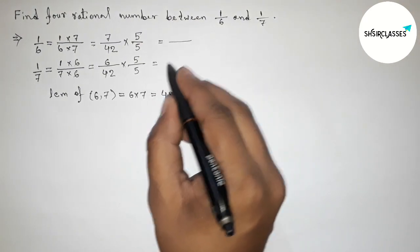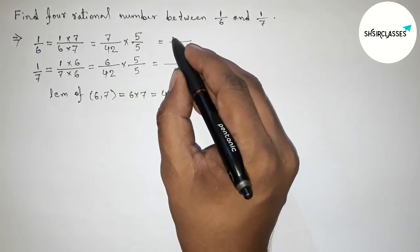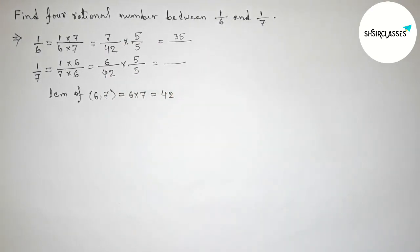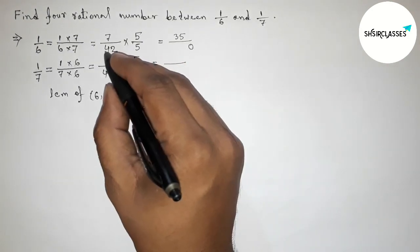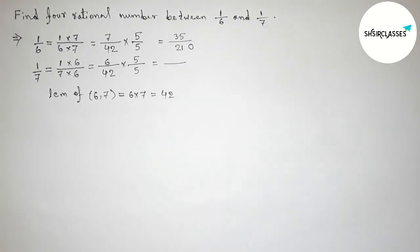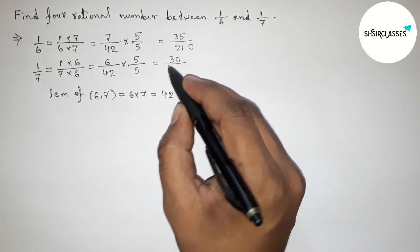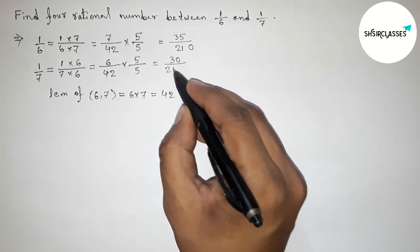So now equals to this is 7 times 5 is 35, and now multiplying this, so 5 times 2 is 10 carry 1, 5 times 4 is 20 plus 1 is 21. So this is 35 by 210.